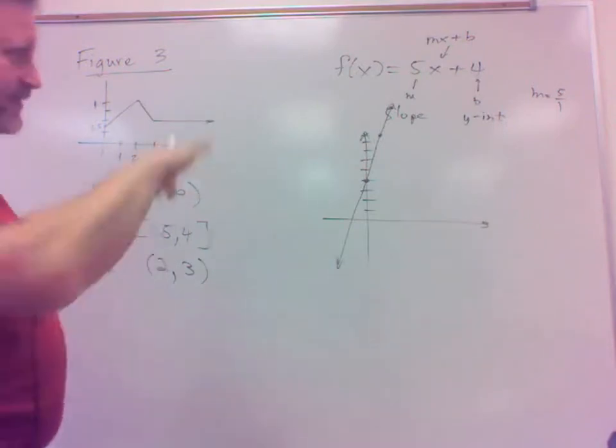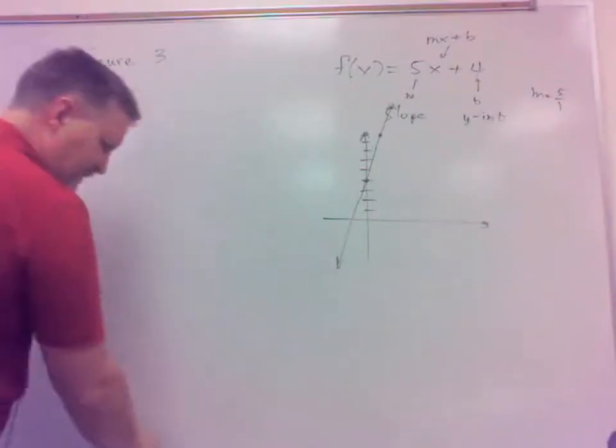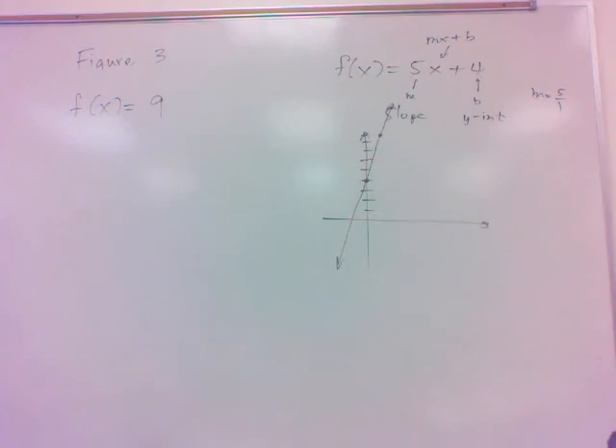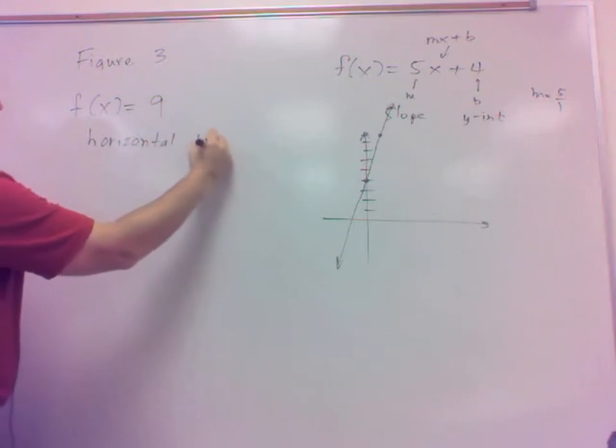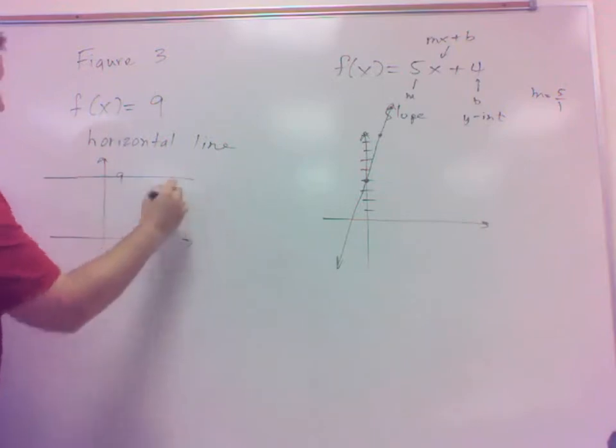The one exception to that, where you have positive infinity, negative infinity, both the domain and range, would be this one. I don't know if I saw one in this book or not, but this one's just a little bit different than that one, because this is where the function is a constant, but that's a line, but it's a special type of line. What type of line have I got here? It's going to be horizontal.